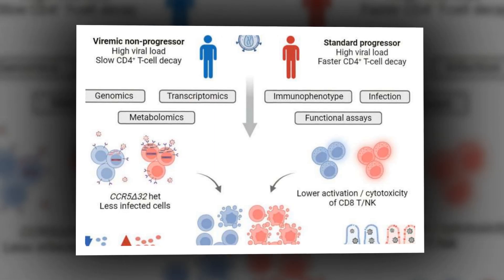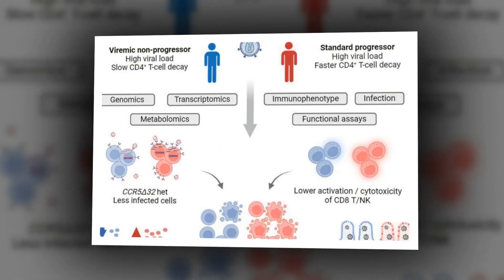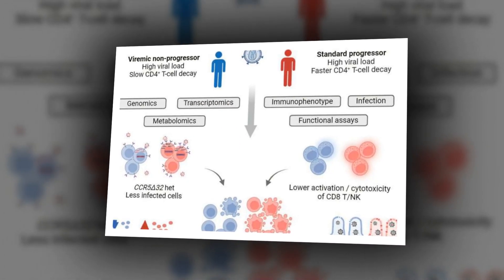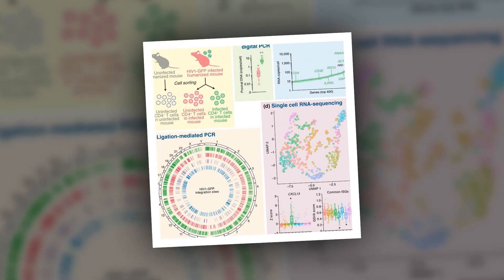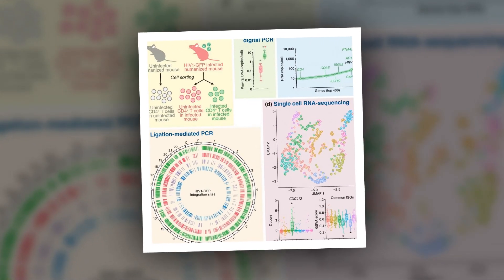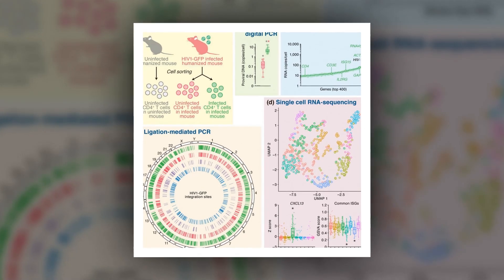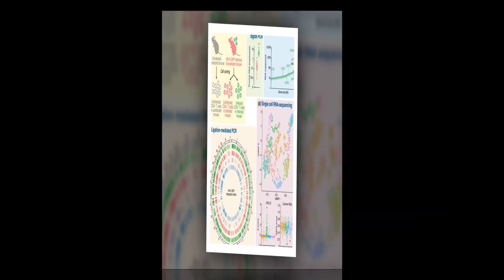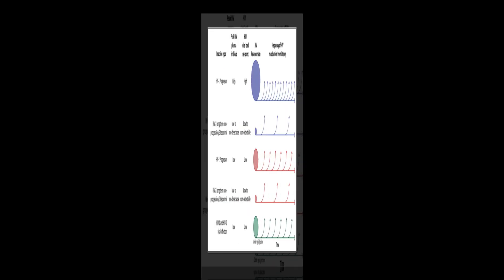Lower levels of apoptosis were also seen in the CD4 T-cells of VNPs. By avoiding chronic immune system activation and excessive cell death, the VNPs were able to maintain a healthier functional immune system, essentially ignoring changing levels of HIV replication.